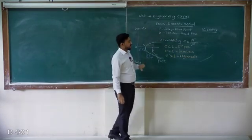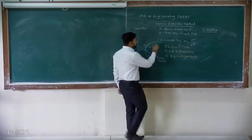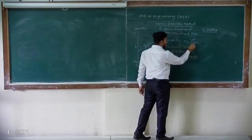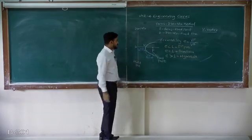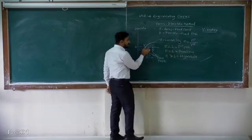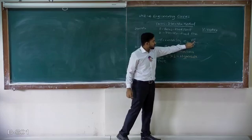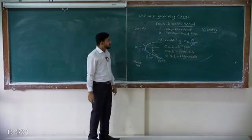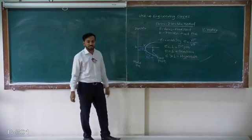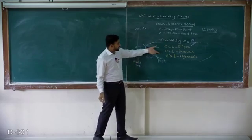Focus directrix method: focus is a fixed point, directrix is a fixed line. Eccentricity is defined as the ratio of the distance of the vertex from the focus to the distance of the vertex from the directrix. The ratio of any point on the curve from the fixed point to the fixed line remains constant — that is eccentricity. This ratio of vertex to focus and vertex to directrix is constant.